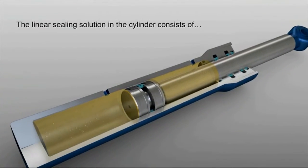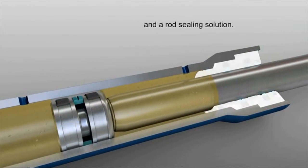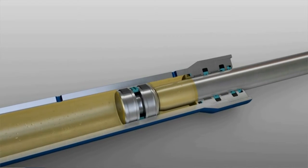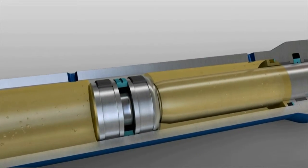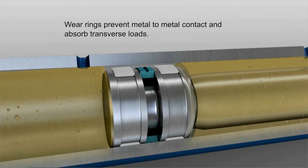The cylinder's linear sealing configuration consists of a piston sealing solution and a rod sealing solution. The piston seal prevents fluid in the cylinder from flowing across the piston, while wear rings prevent metal to metal contact and absorb transverse loads.